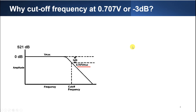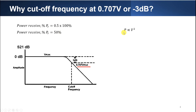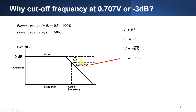Next, we talk about 0.707V. Why? We know that power received is 0.5, which is 50%. We know that power is proportional to voltage squared, so 0.5 equals voltage squared. Voltage equals the square root of 0.5, and you get voltage equal to 0.707. That is where the 0.707V comes from at negative 3dB.